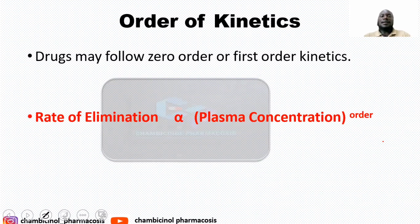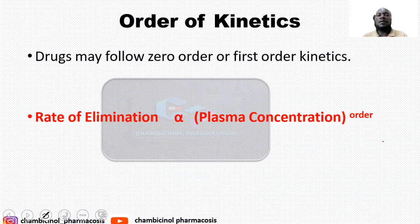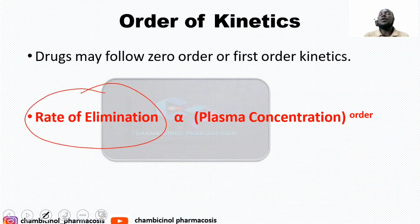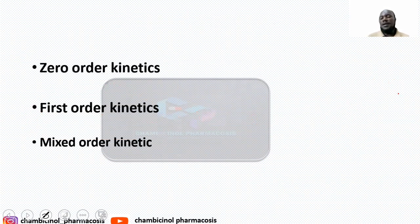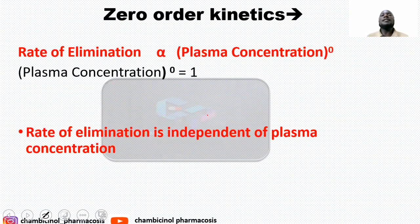We will also look at the order of kinetics. There are three orders: zero order, first order, and mixed order. The rate of elimination is directly proportional to the plasma concentration raised to the power of the order. If the order is zero, anything to the power of zero equals one, so the rate of elimination is constant for zero-order kinetics. The rate of elimination is therefore independent of the plasma concentration. Increasing the plasma concentration will not affect the rate of elimination — it will remain constant. This kind of drug is very dangerous and requires careful monitoring.